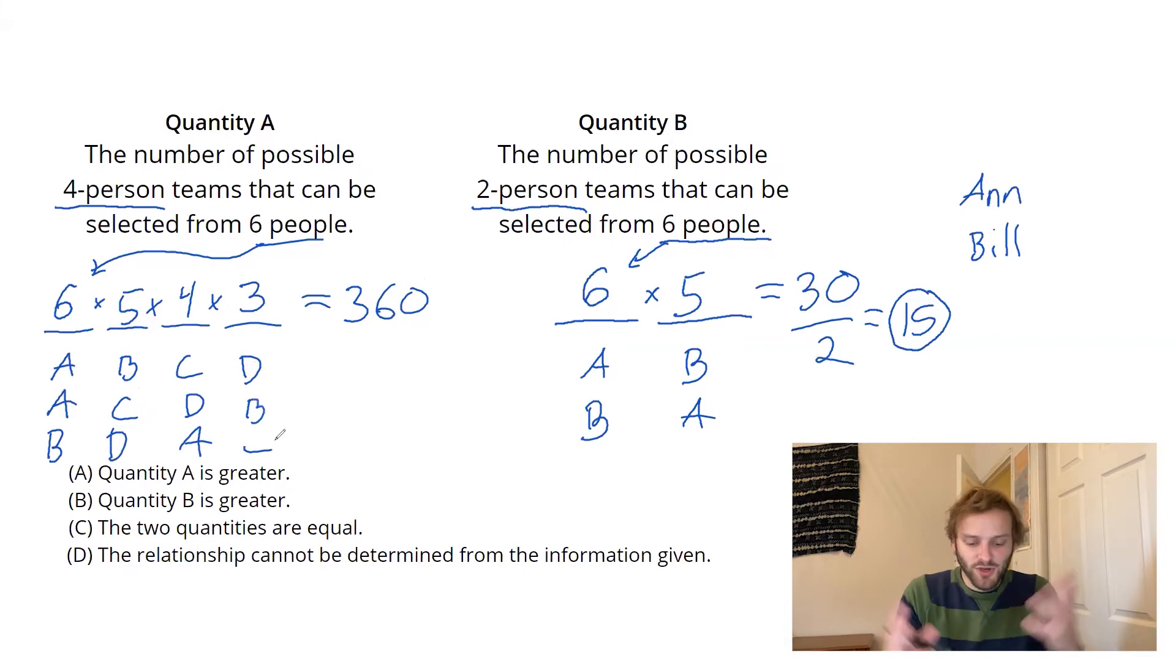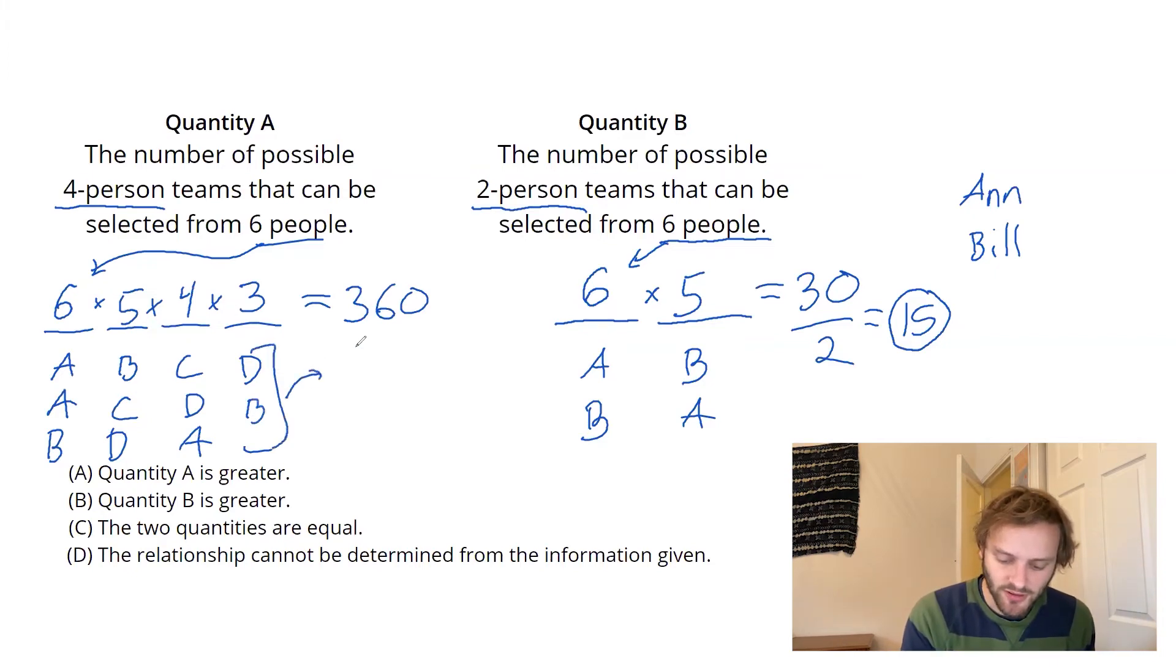How many are there? How much over counting do I have to figure into my division here? It actually turns out that there are four factorial number of ways to order this list, and that four factorial is also the number I need to divide by, because it's the factor by which we are over counting.